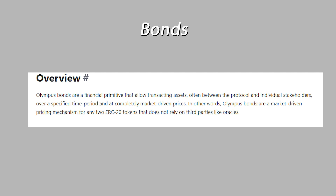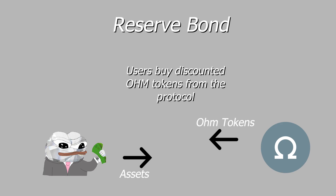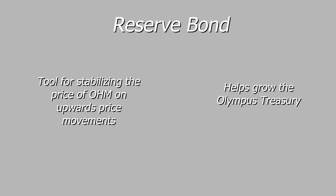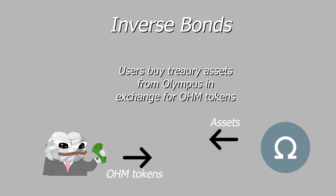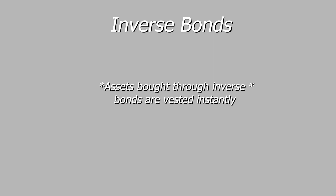Olympus DAO bonds are another one of the most important tools available on the protocol. Olympus defines their bonds as a financial primitive that allows for the transacting of assets, often between the protocol and individual stakeholders, over a specified time period and at completely market-driven prices. Olympus offers users four different types of bonds to help manage demand and supply forces for the OHM token. The first type is the reserve bond, which works by offering users discounted OHM tokens in exchange for assets used as reserves for the Olympus treasury. Inverse bonds work oppositely to reserve bonds by selling treasury assets in exchange for OHM tokens, serving as a tool to absorb market sell pressure. Tokens bought through inverse bonds are vested instantly.